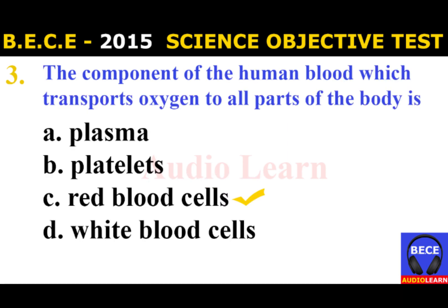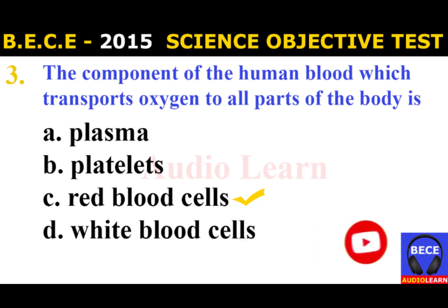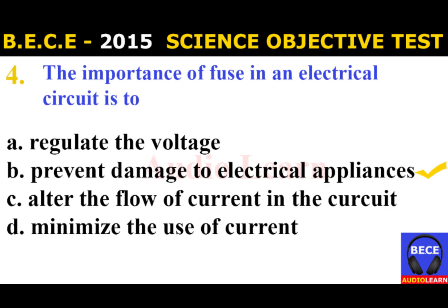Number 3: The component of the human blood which transports oxygen to all parts of the body is A. Plasma, B. Platelet, C. Red Blood Cells, D. White Blood Cells. The answer is C. Red Blood Cells. The component of the human blood which transports oxygen to all parts of the body is Red Blood Cells.